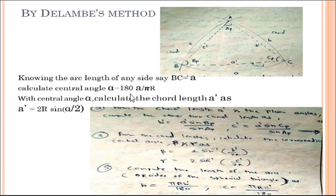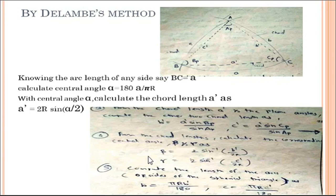With the central angle α, calculate the chord length A' as A' = 2R sin(α/2). Similarly, we can find B' and C'. From the chord length A' and the plane angles, calculate the other chord lengths B' and C'. Then calculate the corresponding central angles: β = 2 sin⁻¹(B' / 2R), γ = 2 sin⁻¹(C' / 2R). Finally, calculate the arc lengths or sides B and C of the spherical triangle.